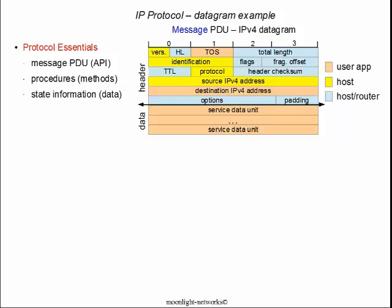In IPv4 — and we'll talk about IPv6 later in the course — the message format is illustrated here. It's really broken into two large segments: the header and the data, or the service data unit that is received from the upper layer. So TCP or UDP would pass a service data unit to the IP protocol, which would then encapsulate it as we've seen here.